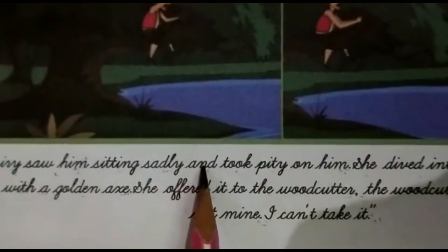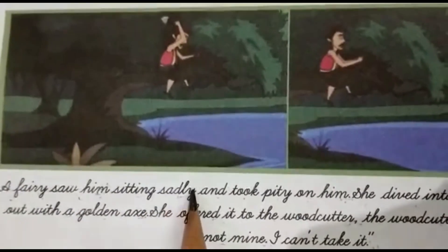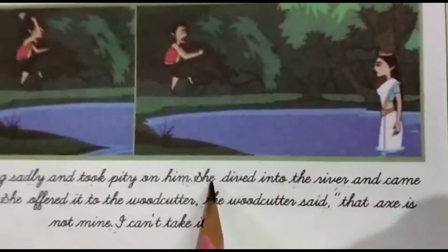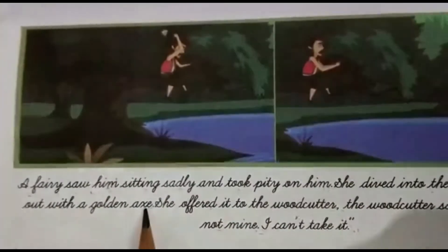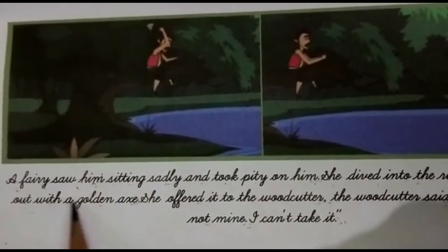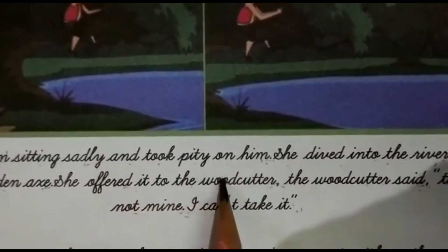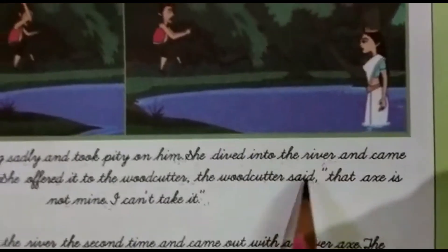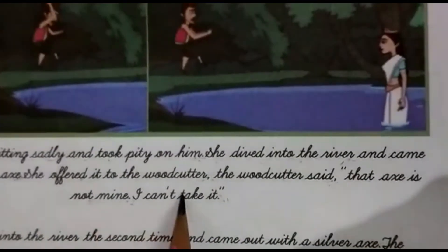A fairy saw him sitting sadly and took pity on him. She dived into the river and came out with a golden axe. She offered it to the woodcutter. The woodcutter said that axe is not mine. I cannot take it.